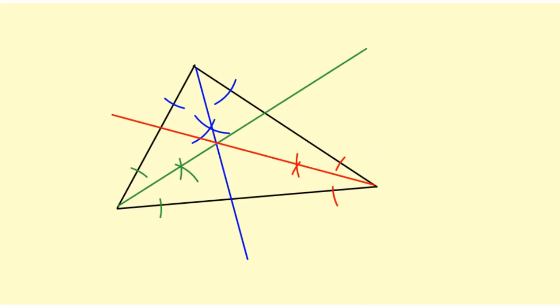This point here is the incenter. Now the reason it's called the incenter is because it is the center of a circle that is inscribed in the triangle. Now the problem is I can't just take my compass and put the center here and just kind of eye it.